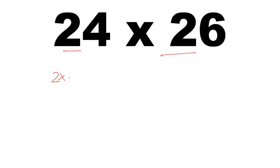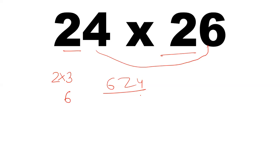Again we have tens digit same and the sum of unit digits is 10. Take 2 and the next number, which is 3: 2 into 3 is 6. Now multiply the unit digits 4 and 6: 4 into 6 is 24. So the answer is 624 — that is, 24 into 26 is 624.